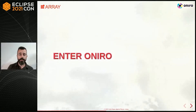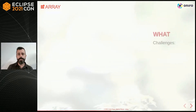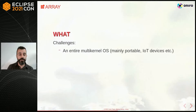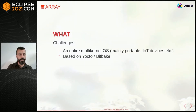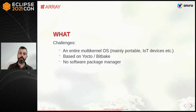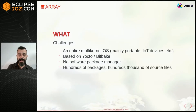Let me briefly show how these pan out in Onero. Onero is a very challenging project by its very nature — it's a multi-kernel OS targeting mobile devices and IoT devices. For this reason we are using Yocto and Bitbake. From the legal point of view we face the problem that there is no software package manager, so we have no way to anticipate what package goes in, and there is no apt or any source package manager at all. We need to do that in another way.